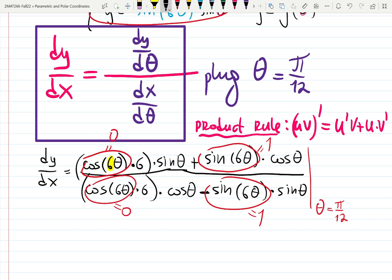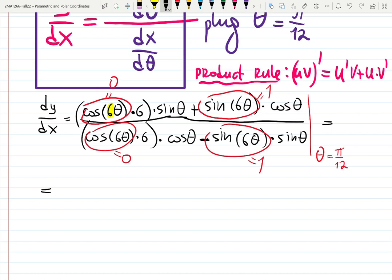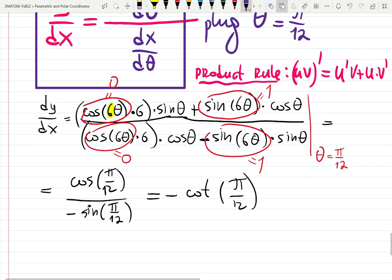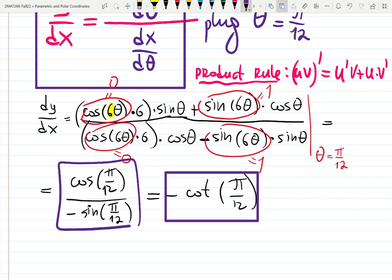In the answer, I can see they give you minus cotangent, but you don't have to write it down. You can write down cosine of pi over 12 divided by minus sine of pi over 12, which is, by the way, minus cotangent pi over 12. This is the right answer, and this is the right answer.